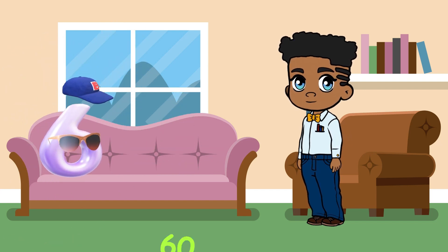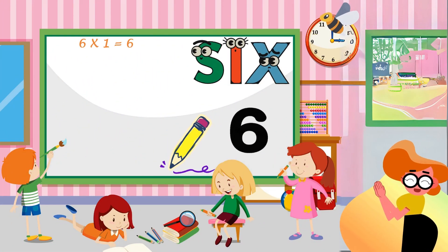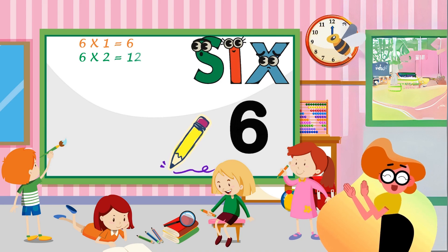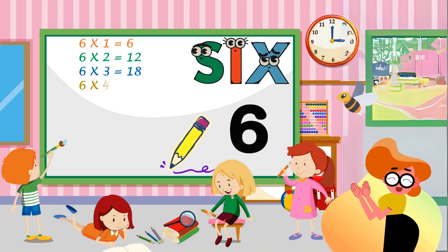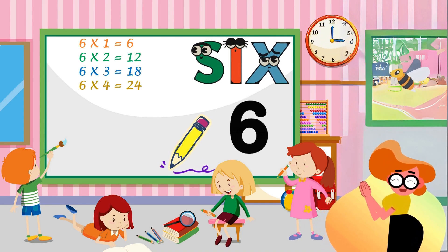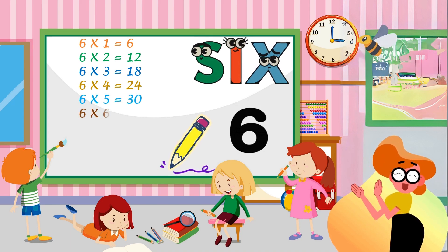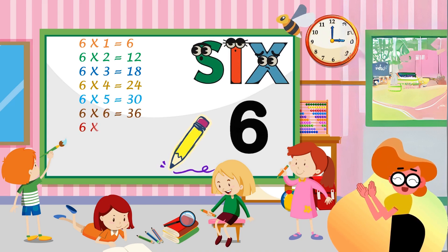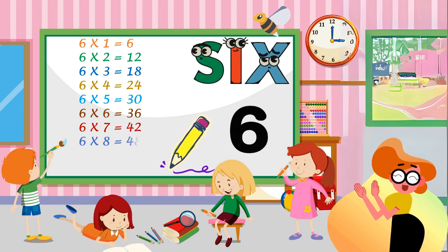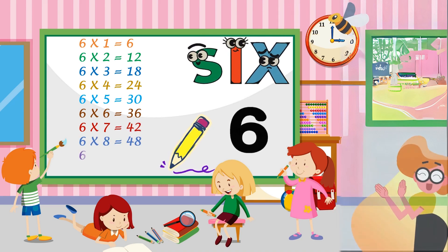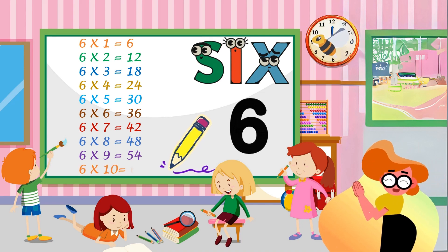Six times one is six. Six times two is twelve. Six times three is eighteen. Six times four is twenty-four. Six times five is thirty. Six times six is forty-two. Six times eight is forty-eight. Six times nine is fifty-four. Six times ten is sixty.